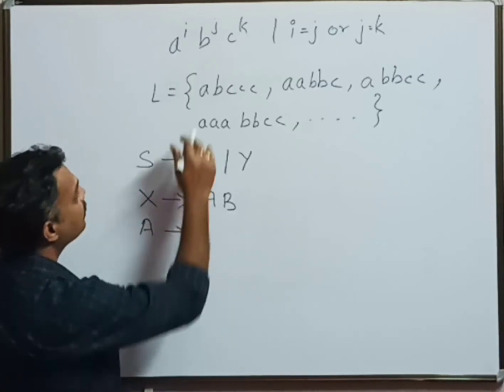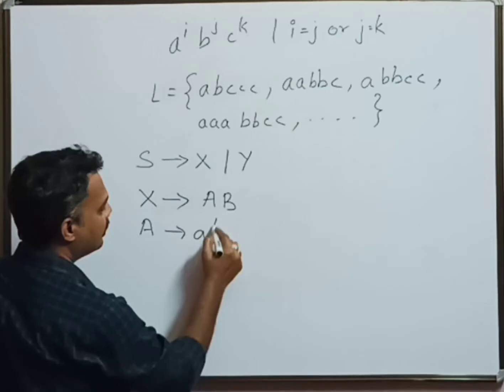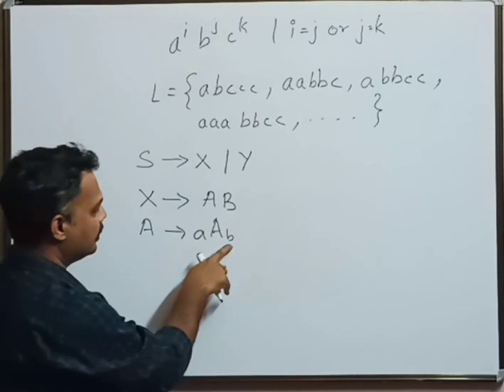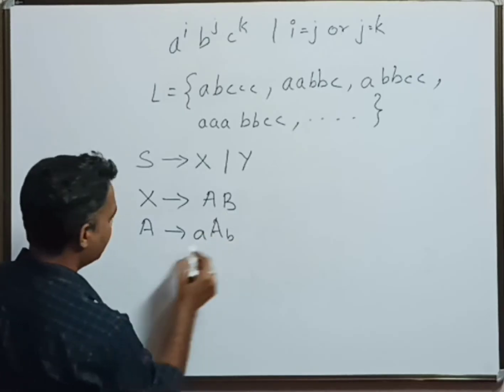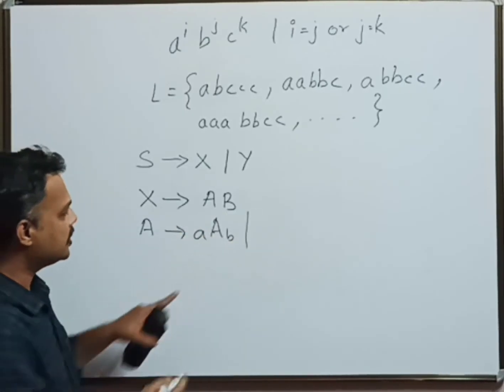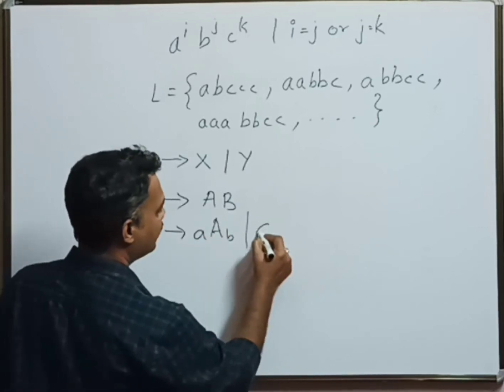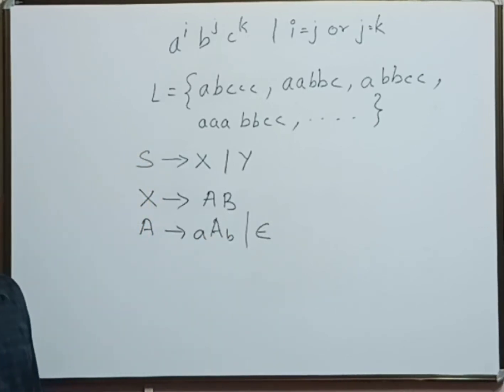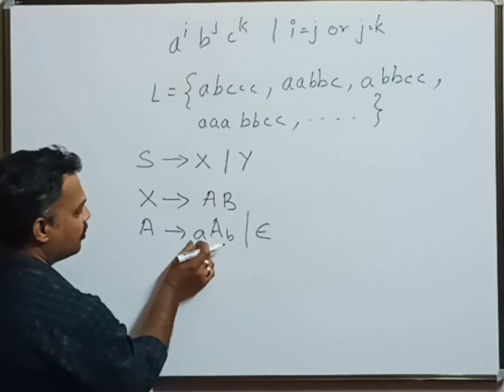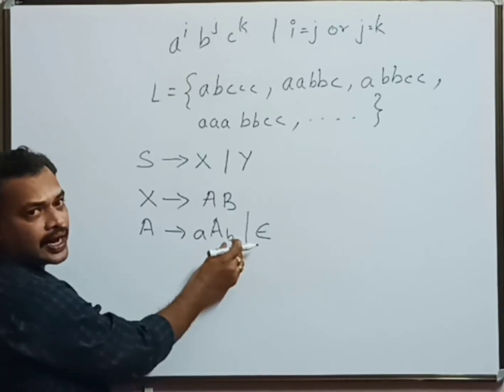A will be aAb, so for every a there is a b. Then after we generate the required number of a's and b's, we have to stop this recursion by putting epsilon or replacing A with epsilon. Now number of a is equal to number of b, that part is done.